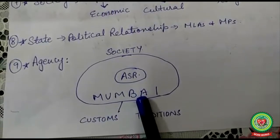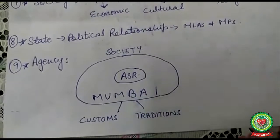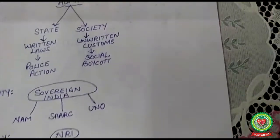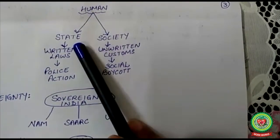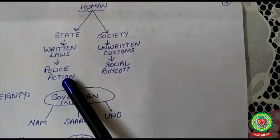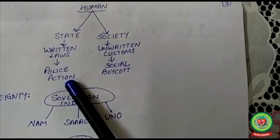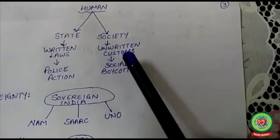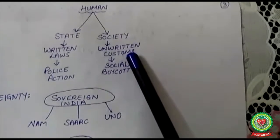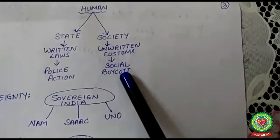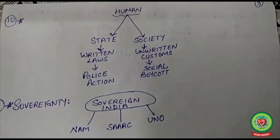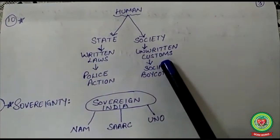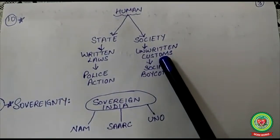Society has its own regulating system but does not have written laws, whereas the state has written laws. If anyone violates state laws, the state takes action through the police. But if anyone disobeys society's customs and traditions, society takes action by ostracizing that person — society never welcomes such a person in social gatherings. Society cannot punish that person through police action.